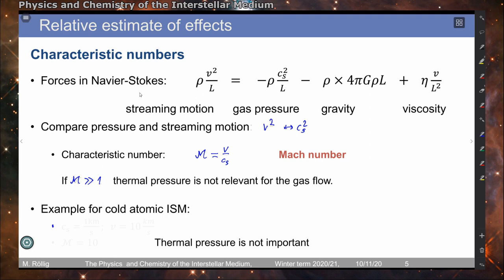If the Mach number is much larger than 1, the thermal pressure is not relevant for the gas flow, because the fluid elements are moving much faster than the individual particles in every fluid element. For example, in the cold atomic medium the sound speed is on the order of 1 km/s, and typical streaming motions are on the order of 10 km/s, giving a Mach number on the order of 10. Typical Mach numbers in the interstellar medium are always larger than 1, so we have typically supersonic motion, with the consequence that thermal pressure can be neglected when looking at the overall motion of the gas.